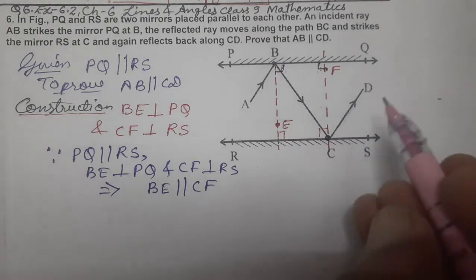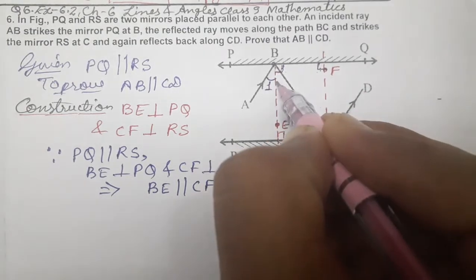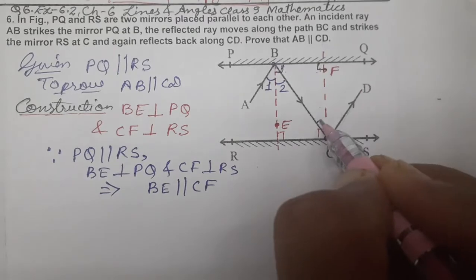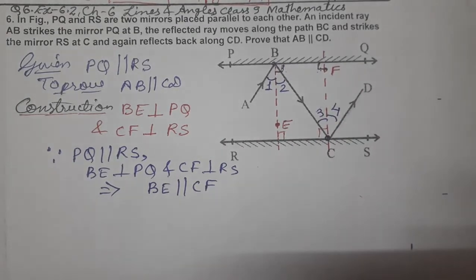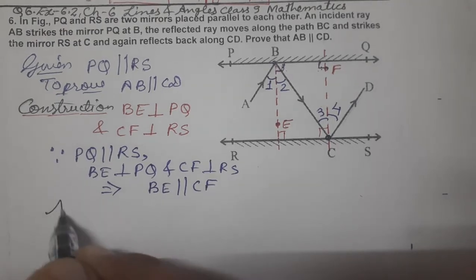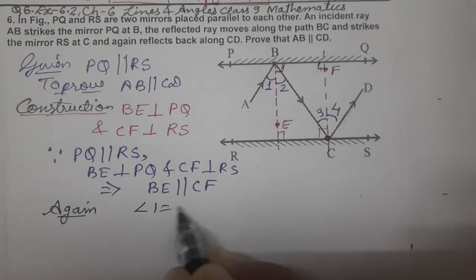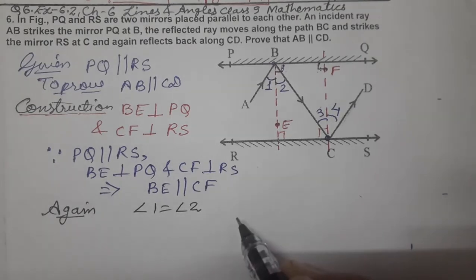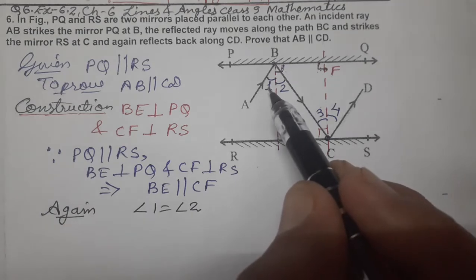This is because co-interior angles sum to 180 degrees, and co-interior angles means lines are parallel. BE parallel to CF. Now see, let us name these: this one is angle 1, this one angle 2, this one angle 3, and this one angle 4.